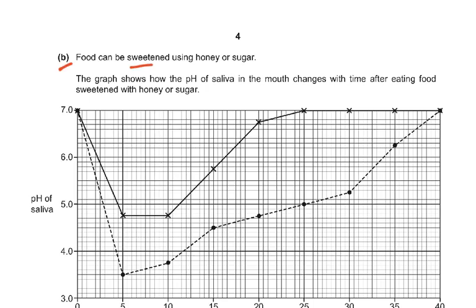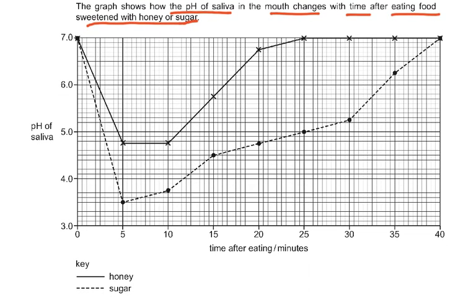Part B: Food can be sweetened using honey or sugar. The graph shows how the pH of saliva changes with time after eating food sweetened with honey or sugar. On the x-axis is time after eating in minutes (0 to 40), and the y-axis is pH of saliva. For honey, the pH decreases, stays constant, then increases, and remains at pH 7 by about 25 minutes.